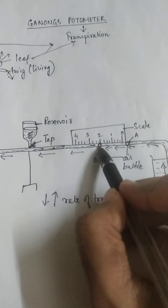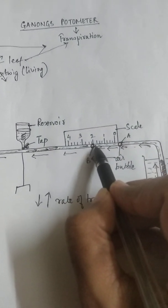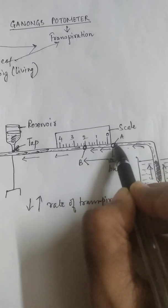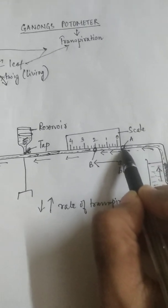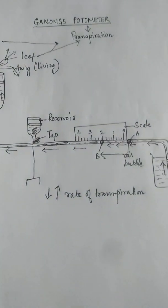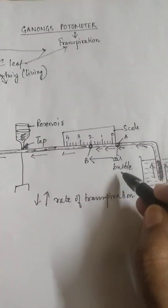And it will be pushing this bubble which was at B and it will force it to go from here to here. And then the moment the bubble comes over here again I turn off the tap. So my bubble is fixed at position A.